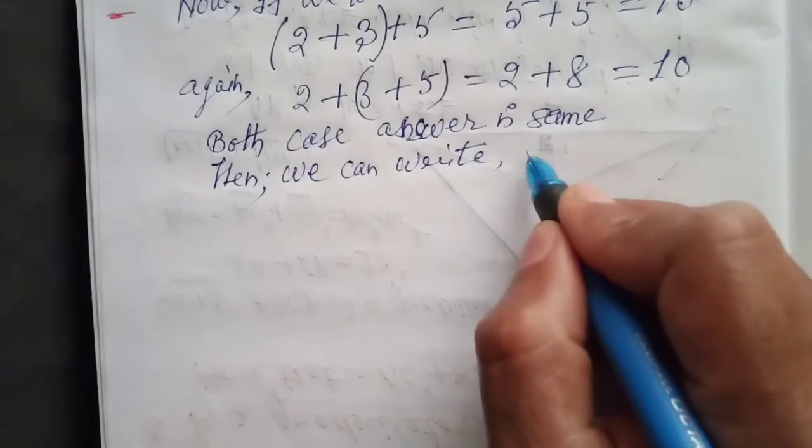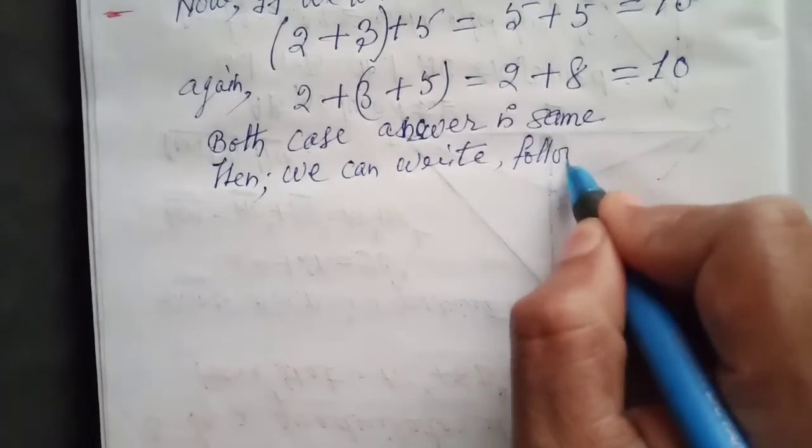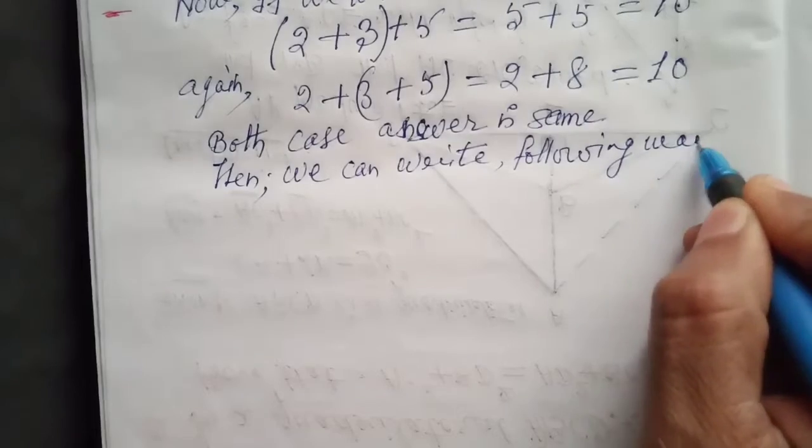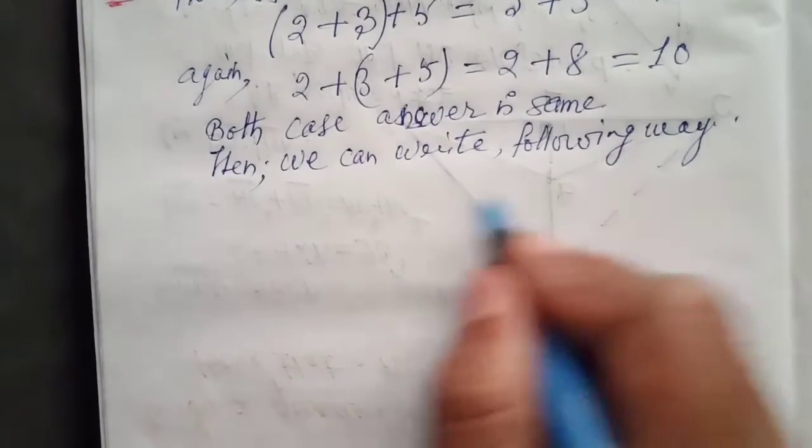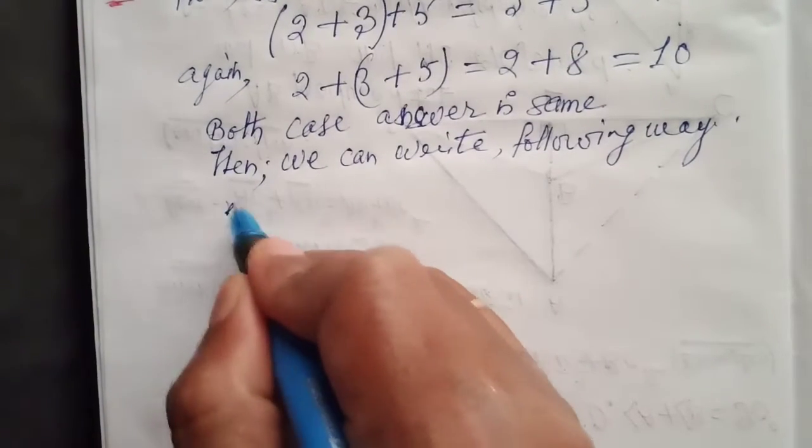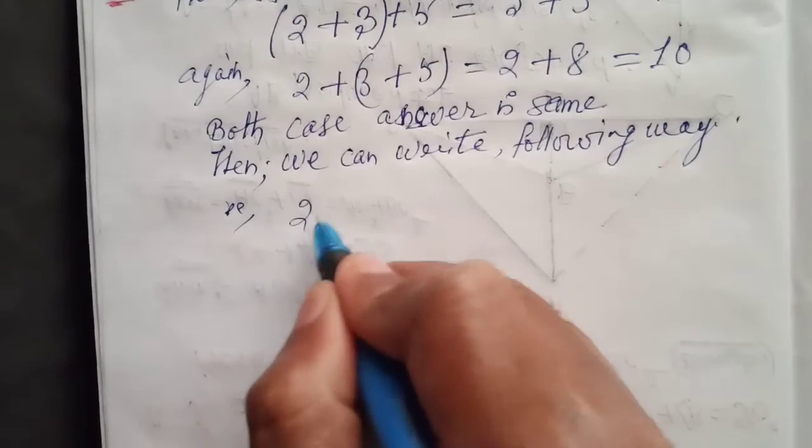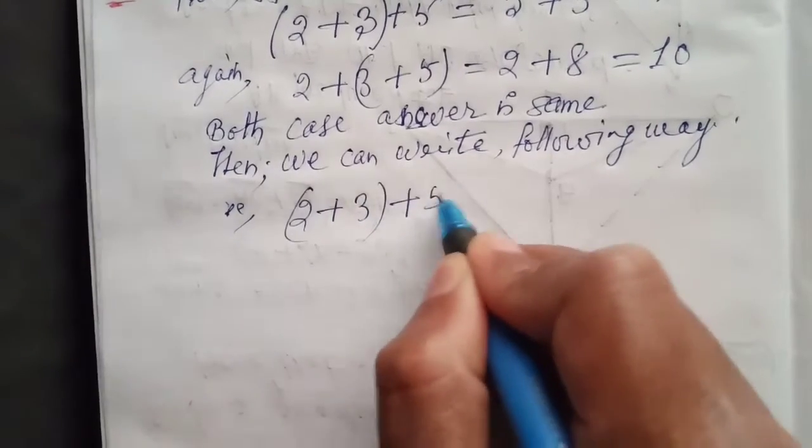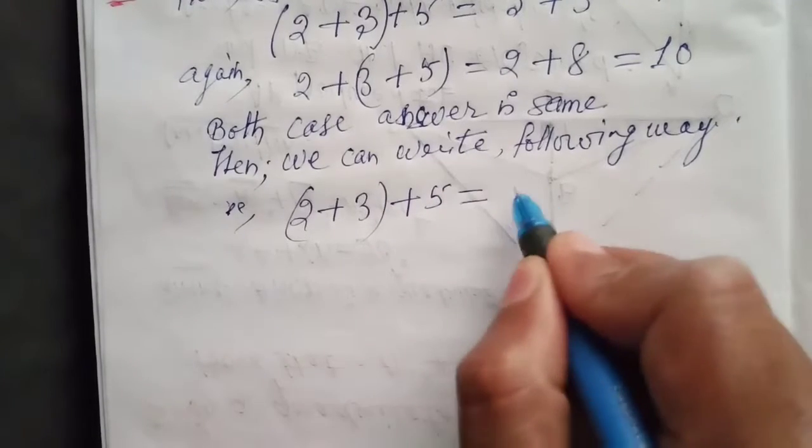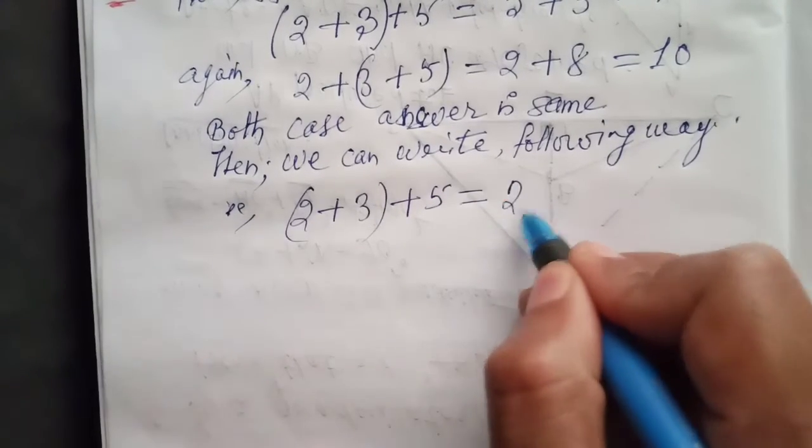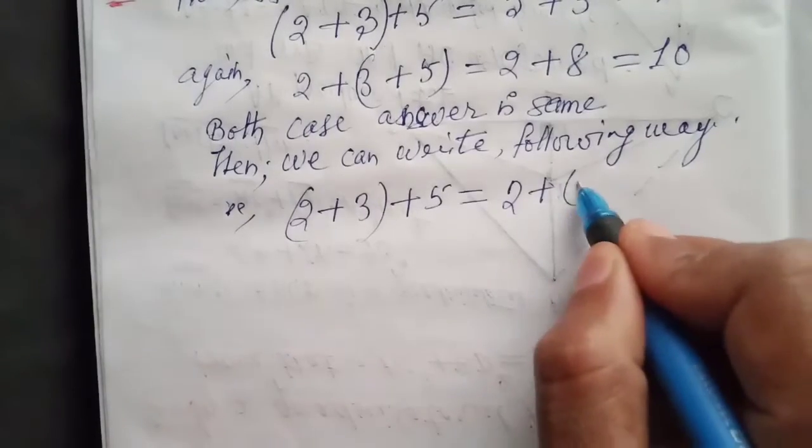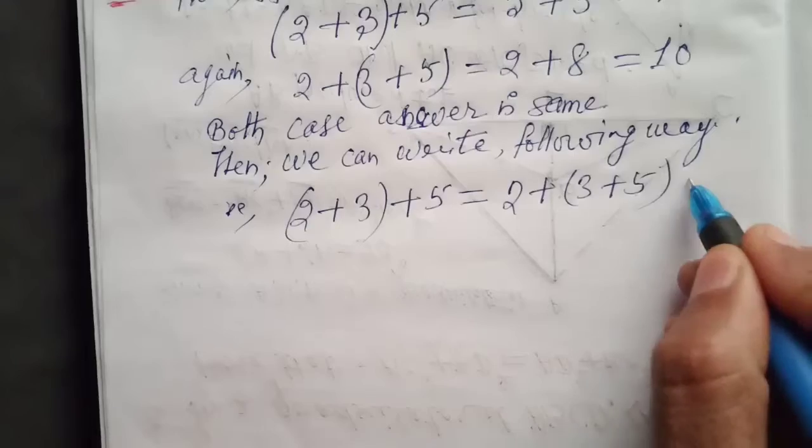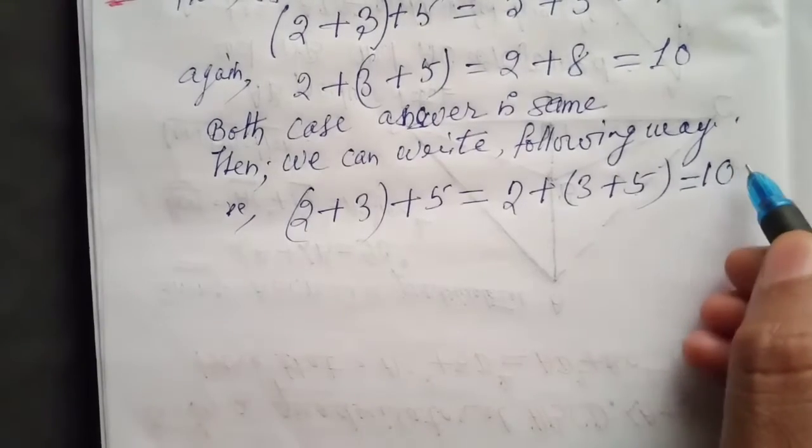In the following way, (2 plus 3) plus 5 equals 2 plus (3 plus 5). In both cases we are getting the result 10.